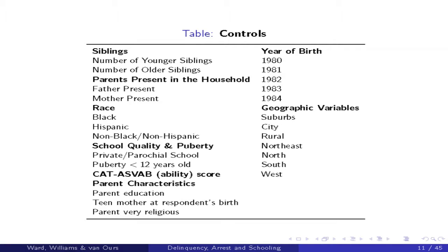In terms of controls, it's a very rich data set. I have all kinds of data on their family: the number of older siblings, younger siblings, whether their parents are present, their parents' education. I have an ability score, which we correct for their level of education. I know whether they had early puberty — which predicts delinquency — whether they went to a private school, whether they had a teen mother, and whether parents were very religious. It's very, very rich on characteristics.